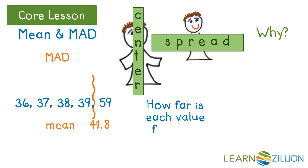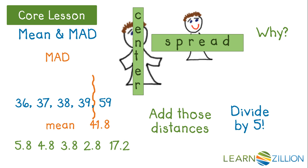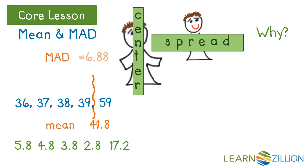First, determine how far each value is from the mean — I'm going to keep a list at the bottom of the page. Please note that I am using the absolute value of those distances, so there are no negatives here. Then you're going to add those distances together and divide by 5, the number of data values. For this data, 34.4 divided by 5 gives a MAD of 6.88. On average, each data value is 6.88 tons from the mean. Remember, the MAD is a measure of how the data varies about the mean.